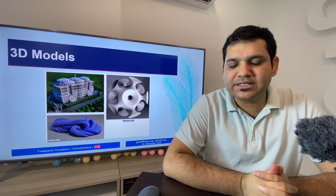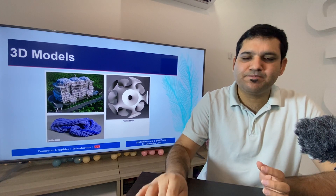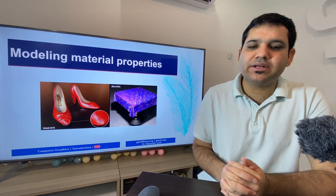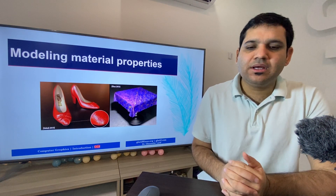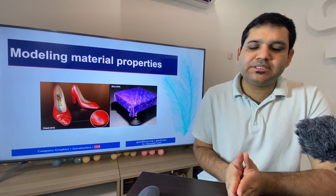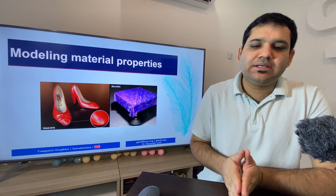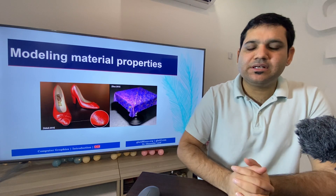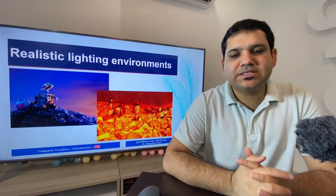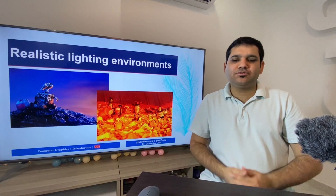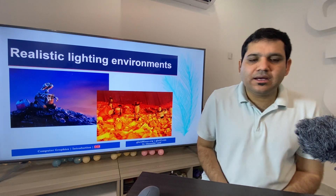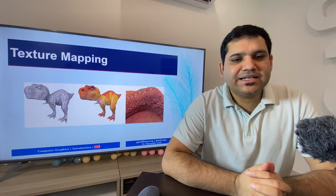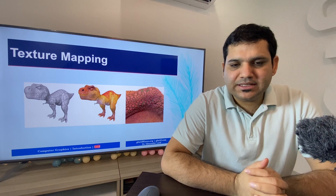These 3D models are further enhanced by manipulating the different properties of computer graphics for better representation. Modeling material properties are being used to enhance the computer graphics to look similar to real-world objects. Next is realistic lighting environments, which are used in computer graphics to enhance the image representation.